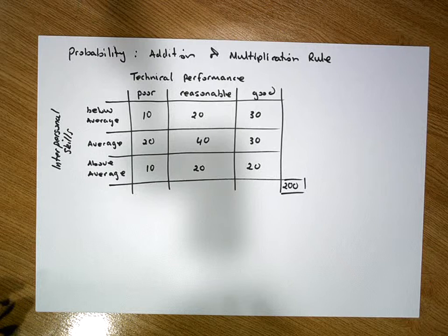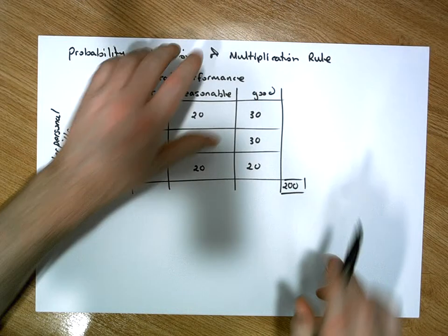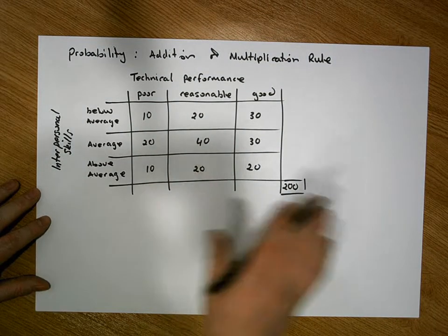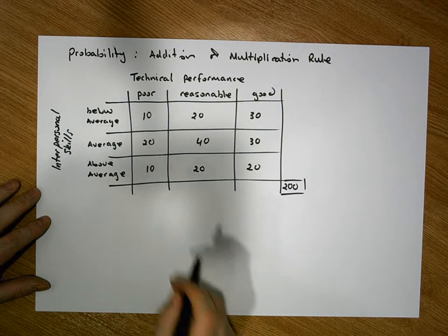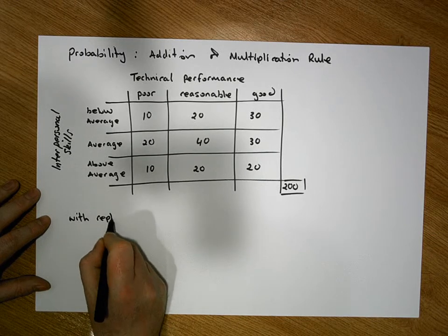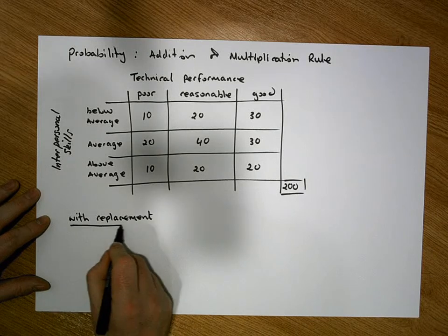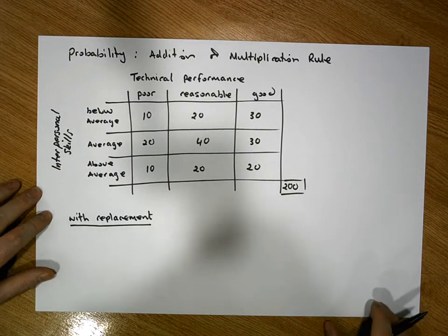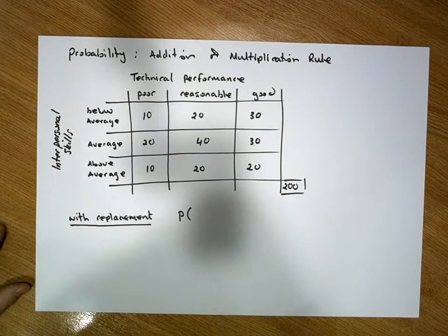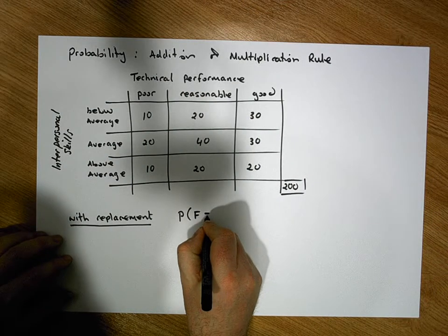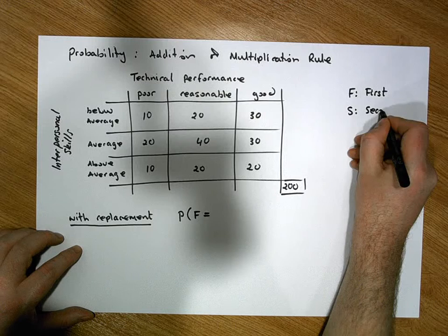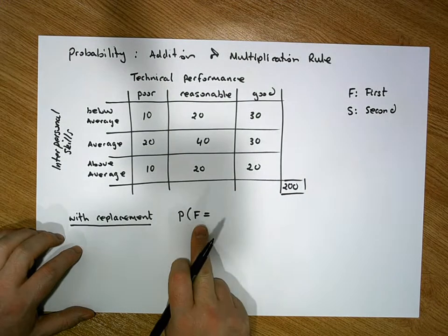What we'd like to do in this example is explore a scenario where we have to use both the addition and multiplication rules. We're going to randomly select two people from this cohort, first with replacement. Let F signify the first person selected and S signify the second person selected.